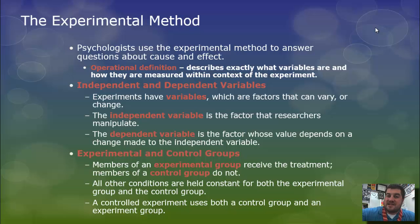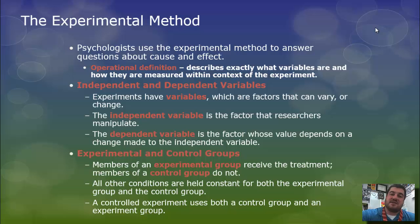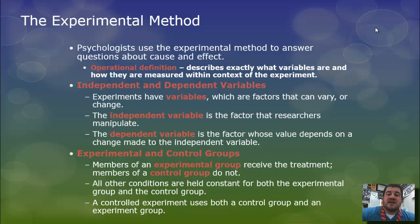In our hypotheses and in our experiment, we have to talk about the variables. An operational definition is what variables are and how they are measured within the context of the experiment. For example, you might do an experiment on sleep. What is sleep? Is sleep getting into bed? Is it actually falling asleep? Is it entering REM, stage 1, 2, or 3? It may seem simple, but you do have to define what those variables are.